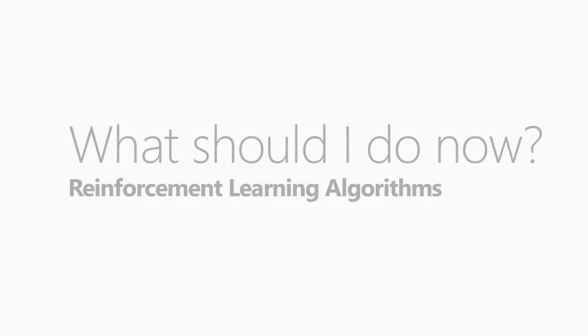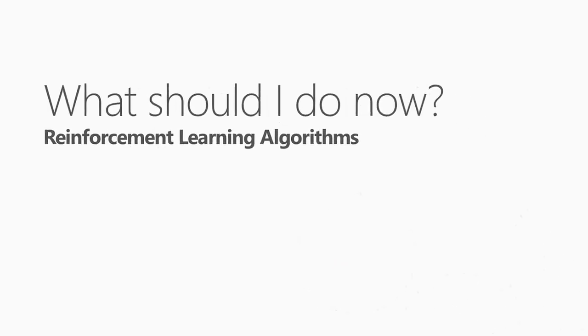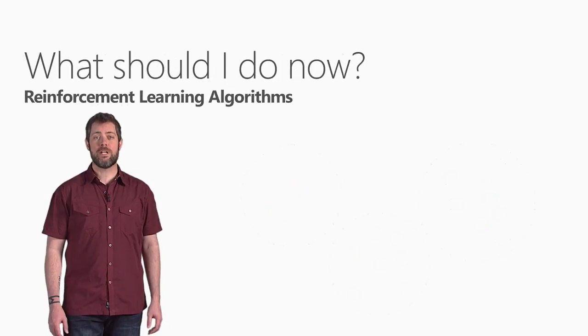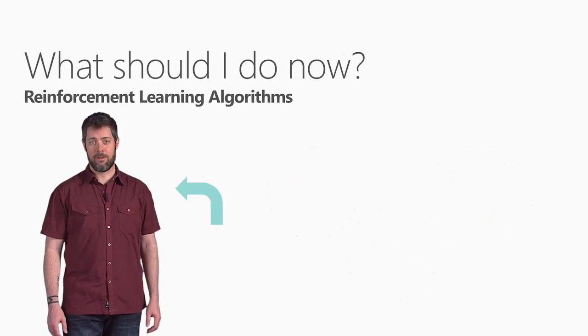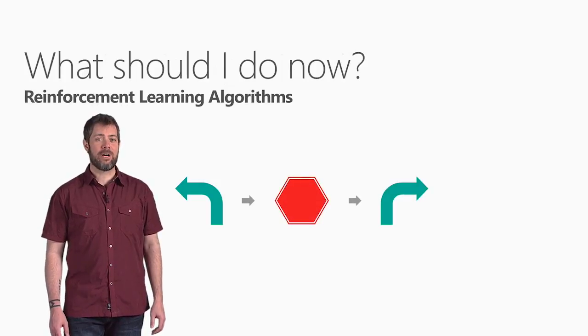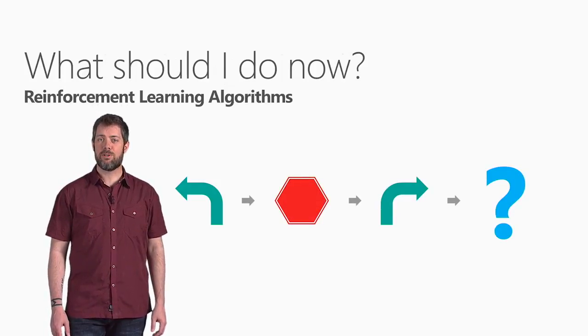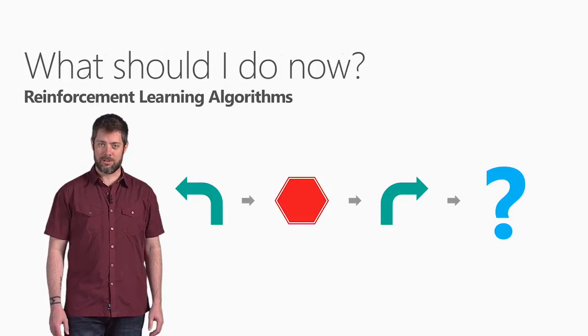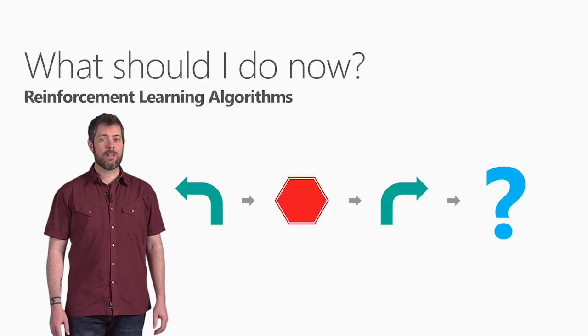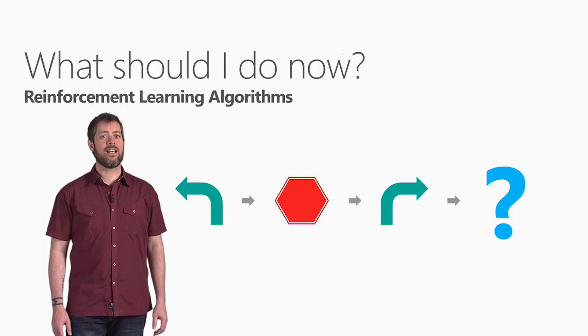The last question, what should I do now, uses a family of algorithms called reinforcement learning. Reinforcement learning was inspired by how the brains of rats and humans respond to punishment and rewards. These algorithms learn from outcomes and decide on the next action.